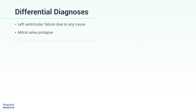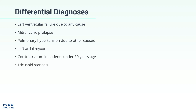Differential diagnoses of mitral stenosis include left ventricular failure due to any cause, mitral valve prolapse, pulmonary hypertension due to other causes, left atrial myxoma, cor triatriatum in patients under 30, and tricuspid stenosis.